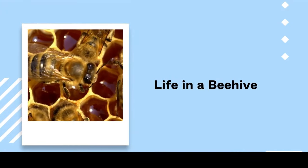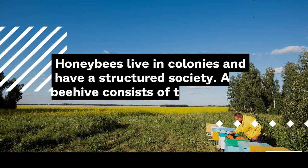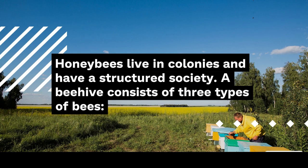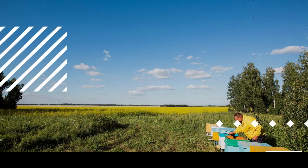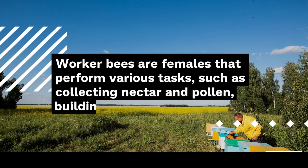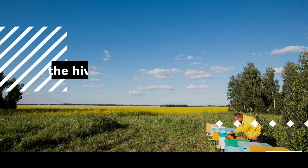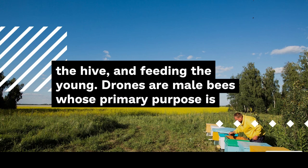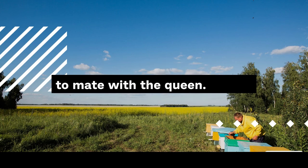In a beehive, honeybees live in colonies and have a structured society. A beehive consists of three types of bees: the queen, worker bees, and drones. The queen is the largest bee and is responsible for laying eggs. Worker bees are females that perform various tasks, such as collecting nectar and pollen, building the hive, and feeding the young. Drones are male bees whose primary purpose is to mate with the queen.